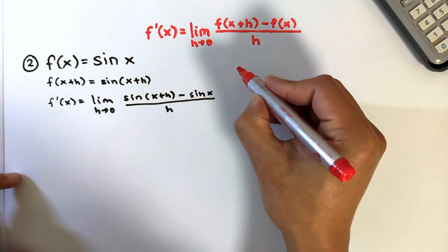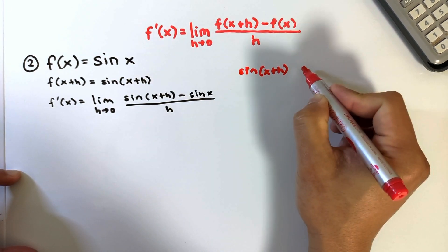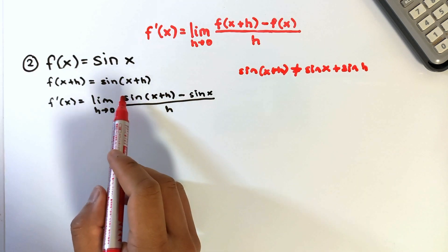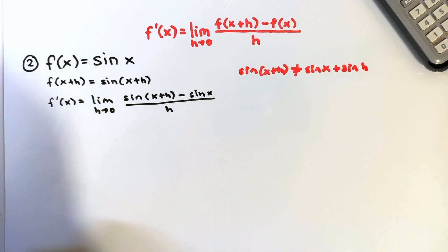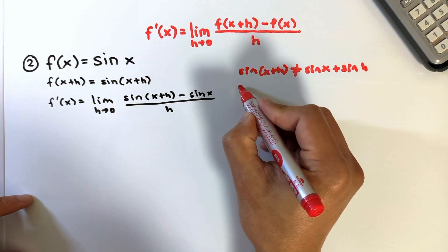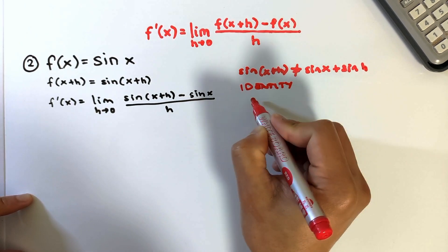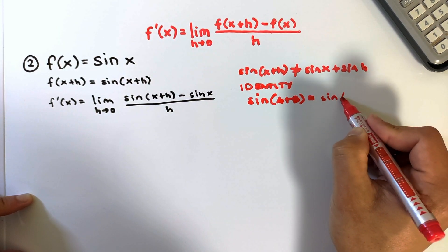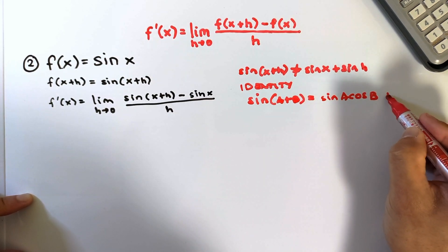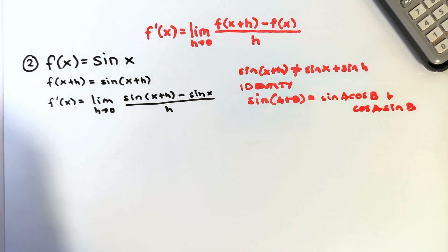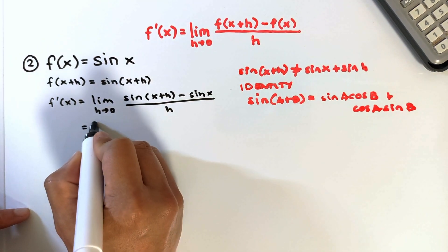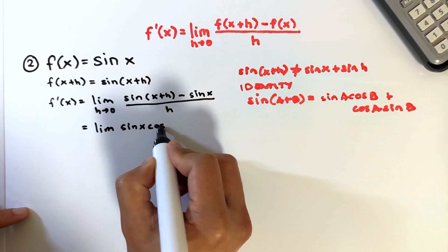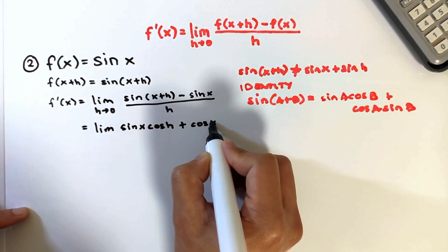Note that sin of x plus h is not equal to sin x plus sin h. We need to use the sum identity for sine. The sum identity is: sin of a plus b equals sin a cosine b plus cosine a sin b. So sin of x plus h equals sin x cosine h plus cosine x sin h.